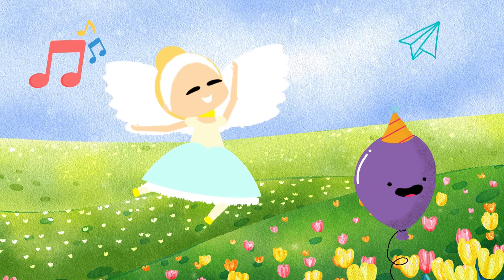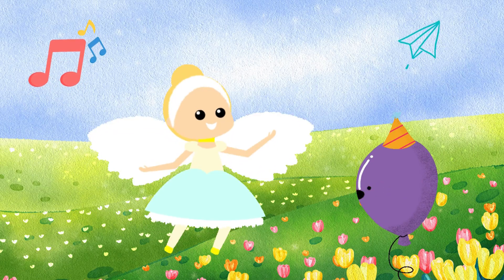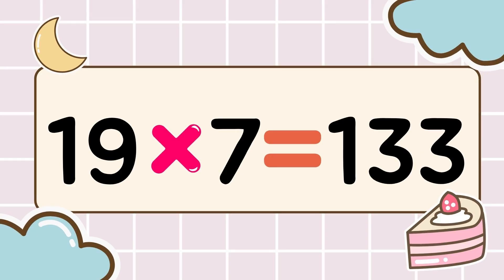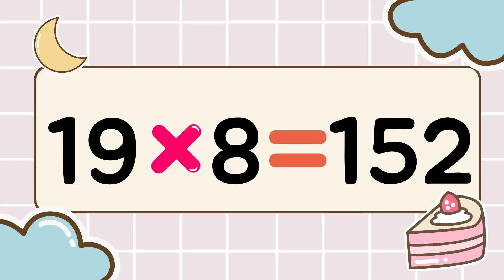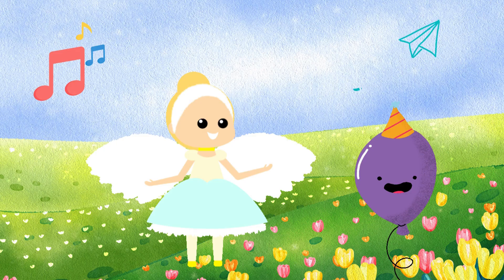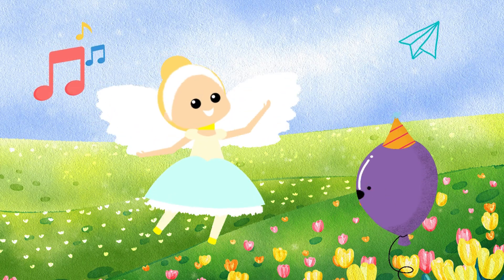Awesome, you did it perfectly so far! Multiplication mode stays on, let's go to the next level! 19 times 6 is 114, 19 times 7 is 133, 19 times 8 is 152, 19 times 9 is 171. Learning times tables is so fun. We are fun, study fun!